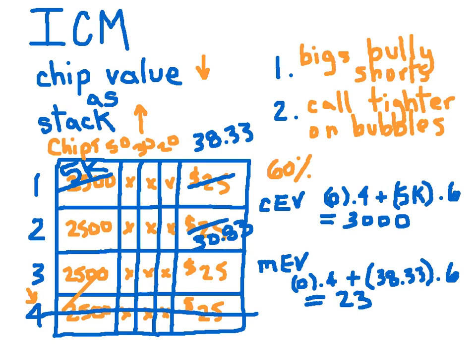Look at it later. After your session, pull up the ICM calculator, the link below in the description. Plug in the chip stacks and the prize pool, and just see if it was positive MEV. If your prize expectation was going up. And that way, you do that enough times, you'll build an intuition of what spots that are marginal chip EV are actually negative monetary EV. And you can play the game that way.